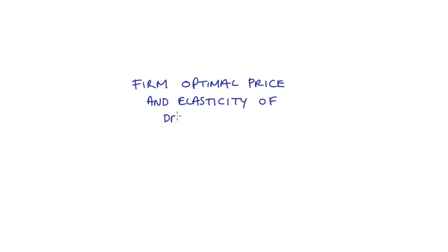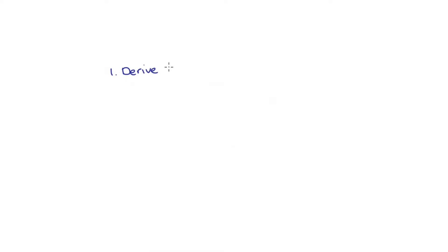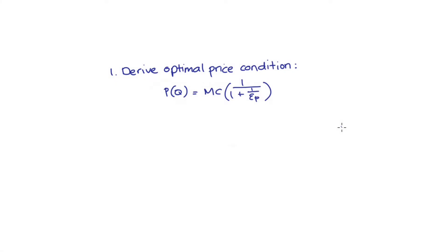Hi everyone. In this video I'm going to discuss firm optimal price and elasticity of demand, in particular how this elasticity of demand affects the markup of price over the cost of production. The formula we'll derive is P equals MC multiplied by 1 over 1 plus 1 over epsilon P, which is our elasticity of demand.